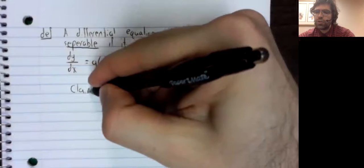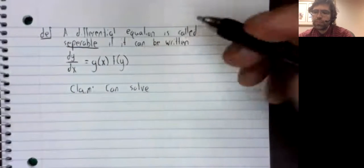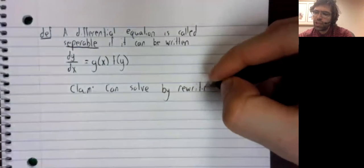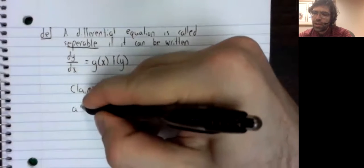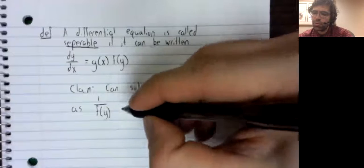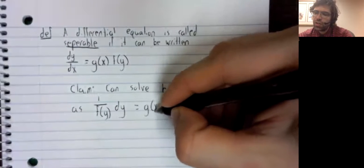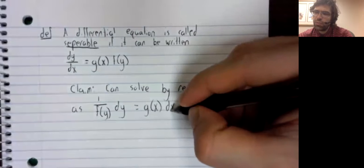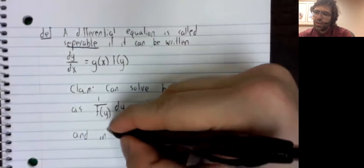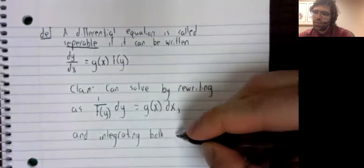And our claim is that we can solve such a differential equation by rewriting it as one divided by the function of the dependent variable times dy equals the function of the independent variable dx, and integrating both sides.